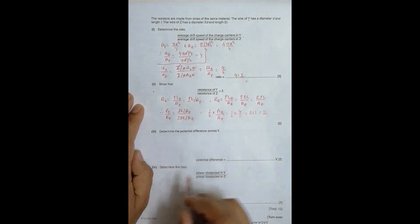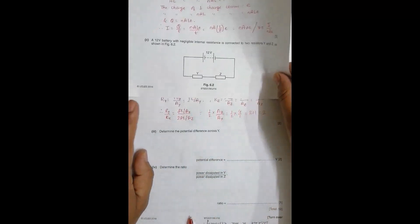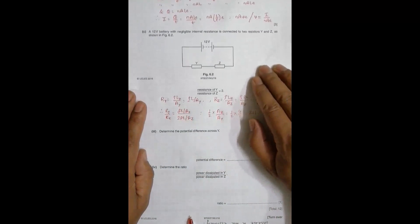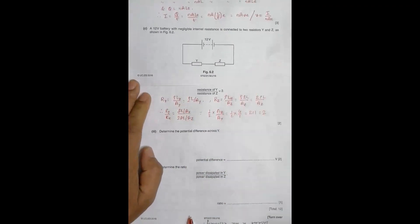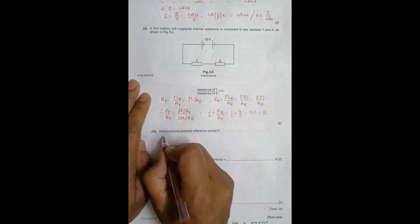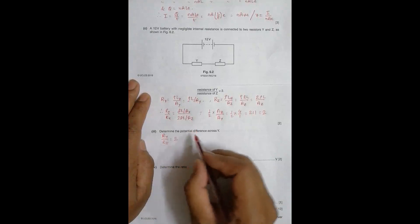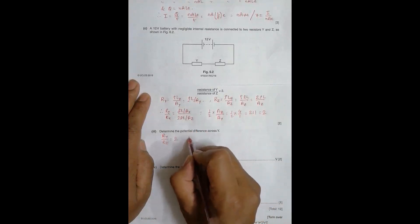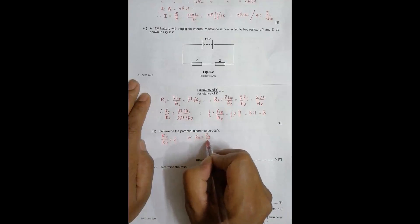Now, determine the PD across this Y. So we need to find the PD across this Y. So from the last equation, what I have is R_Y by R_Z is equal to 2, which gives me R_Z is equal to R_Y by 2.